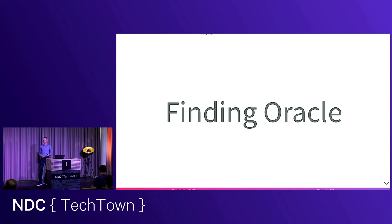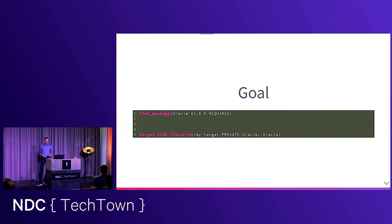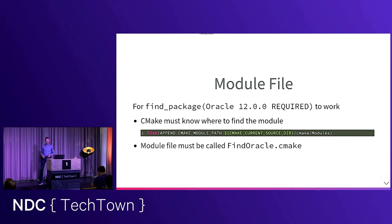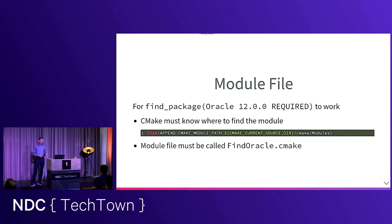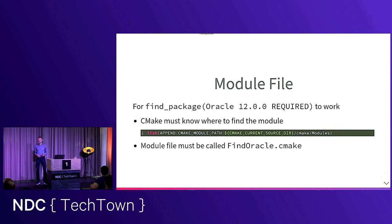Now, the first thing we need is to find the Oracle library and tools. Our goal is to do find_package(Oracle VERSION REQUIRED) and then use it in our targets with target_link_libraries specifying oracle. For find_package to work, CMake must know where to look for our module file. We supply our own module file in a different location, so we add that directory to the CMAKE_MODULE_PATH variable. The module file must be named FindOracle.cmake — that's a hard requirement.